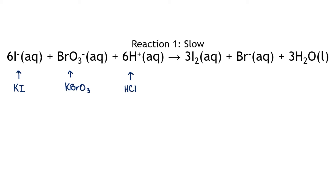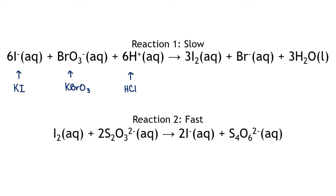One problem with this reaction though is that we can't see the products being produced, and we also can't see how fast they are being produced. So we are going to do a second reaction as our way of measuring and timing. The second reaction takes the iodine from the first reaction and reacts it with a known amount of sodium thiosulfate. When the thiosulfate gets used up in the second reaction, the iodine will start reacting with starch that we also add to the solution. The iodine and starch create a complex that's dark blue.